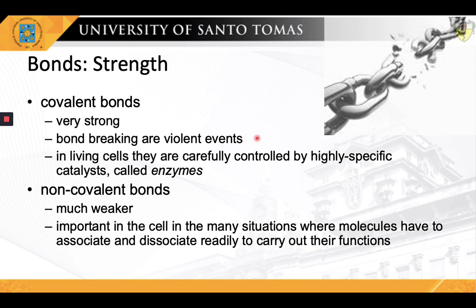The making and breaking of covalent bonds are violent events, and in living cells they are carefully controlled by highly specific catalysts called enzymes. Non-covalent bonds, as a rule, are much weaker, but we shall see later that they are important in the many situations where molecules have to associate and dissociate readily to carry out their functions.